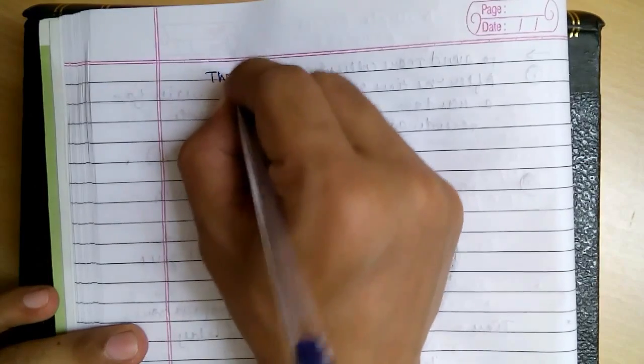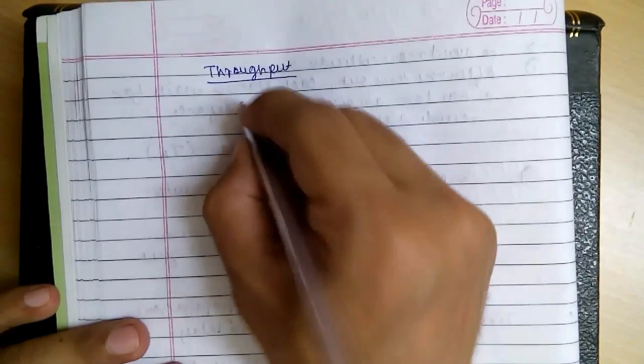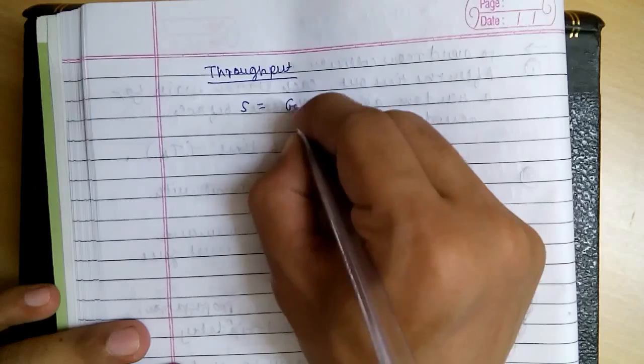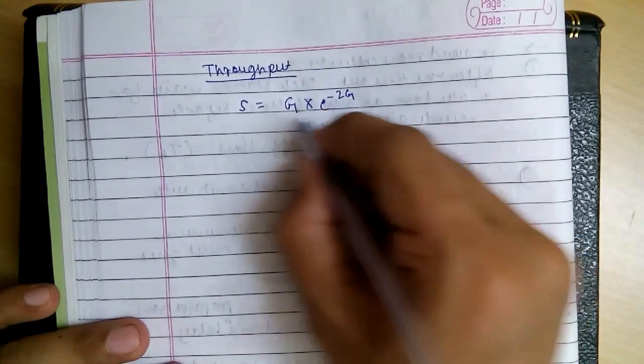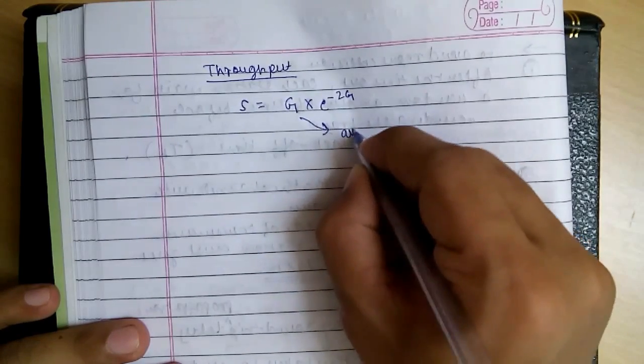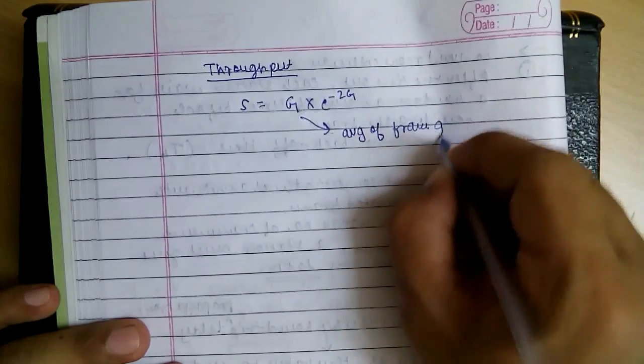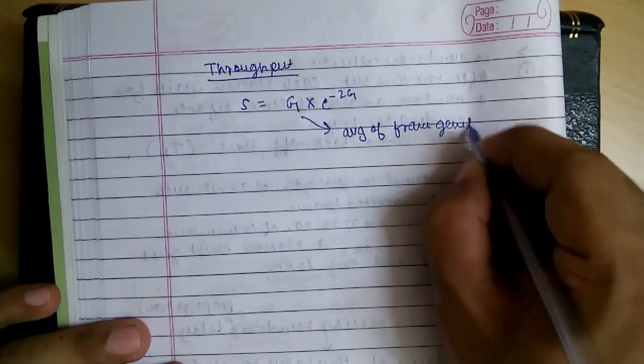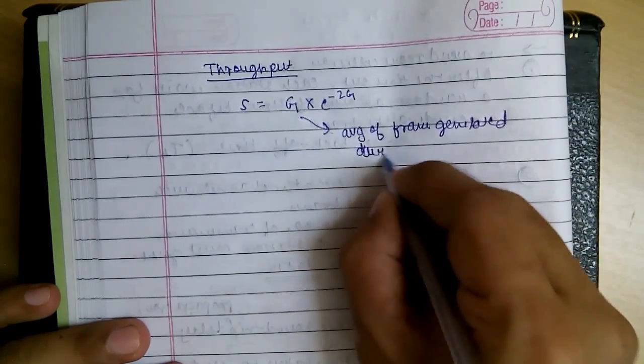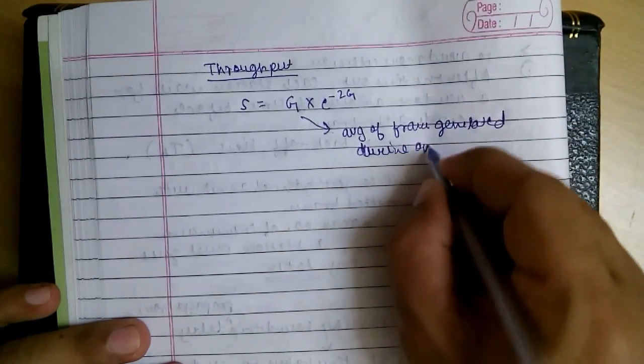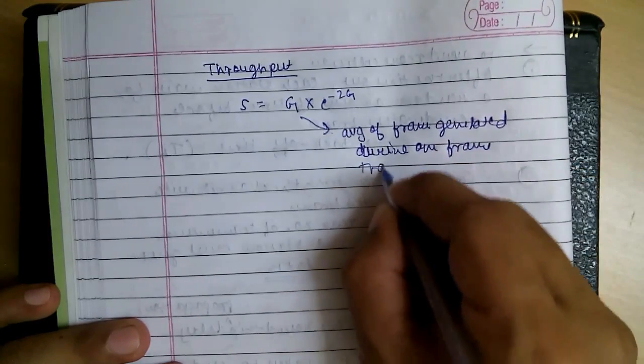The throughput is found out using S is equal to G into e raised to minus 2G. This G is the average number of frames generated during one frame transmission time.